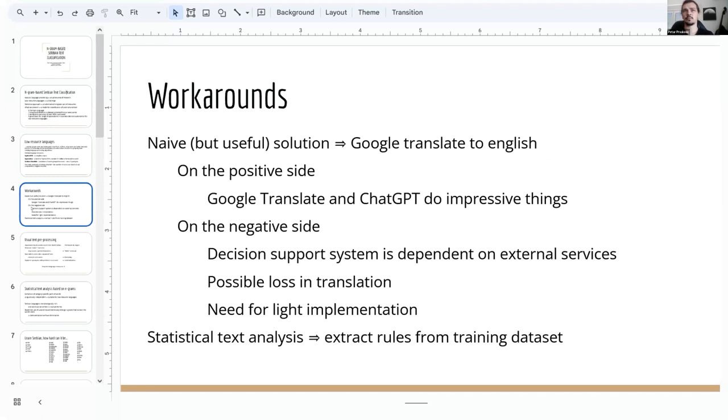There are some possible workarounds to bypass the lack of resources. One approach is to use Google Translate to translate text to English, and then do text processing using all the available resources. Google Translate is not the only translation service available. ChatGPT now can do impressive things, and there are other positive aspects. But on the negative side, the decision support system becomes dependent on external services, which can be a problem for many reasons. There is also a problem of possible loss in translation, for example, if you want to use the information about the specific writing style of a person, which can be distorted through automatic translation.